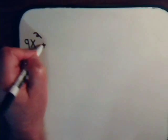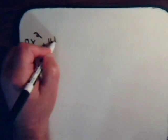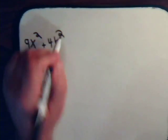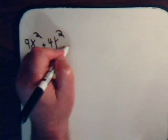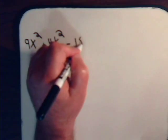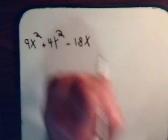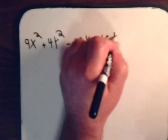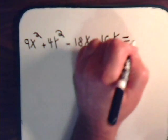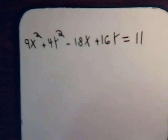For example, suppose we have this equation. We have an x squared multiplied by a coefficient, say 9, and then we have a y squared multiplied by its coefficient. And then we have, say, minus 18x plus 16y equals some constant, say 11.